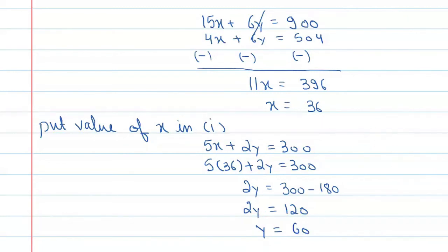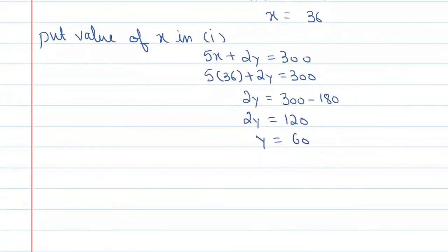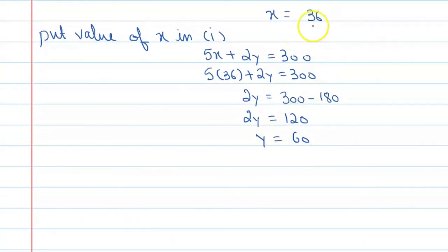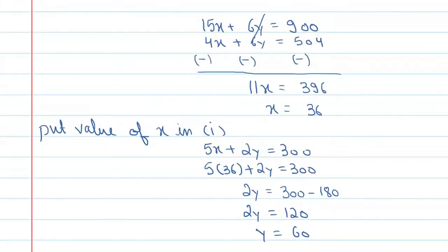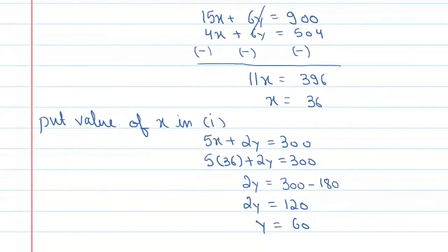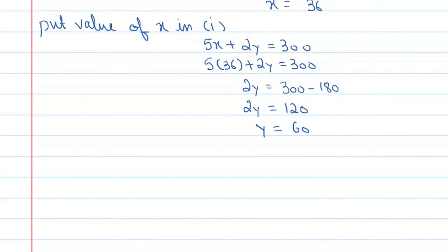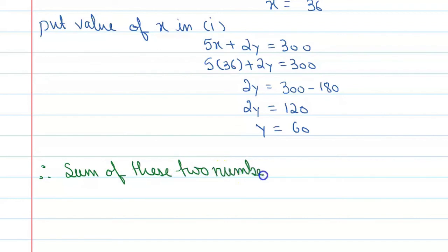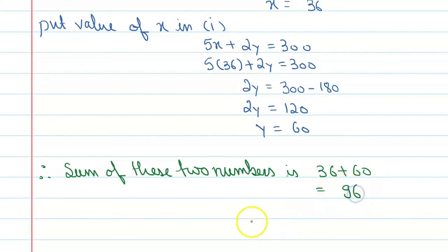So these are the two numbers that the people have chosen — you can see Alfred's number is 36 and Rani's number is 60. Both are two-digit numbers. We need to find the sum of these two numbers. Therefore, sum = 36 + 60 = 96. And the correct option is A.